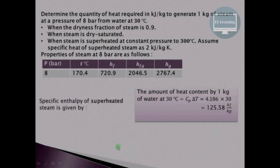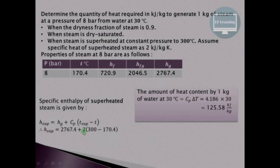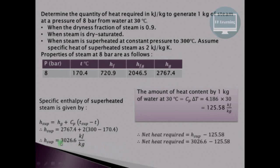For Case 3, the steam is superheated. The specific enthalpy of superheated steam is H_sup = HG + Cp × (T_sup − T_sat). HG from the table is 2767.4 kJ/kg, Cp is 2 kJ/kg·K, superheated temperature is 300°C, and saturation temperature at 8 bar from the table is 170.4°C. Calculating gives H_sup = 3026.6 kJ/kg, and the net heat required is 3026.6 − 125.58 = 2901.02 kJ/kg.